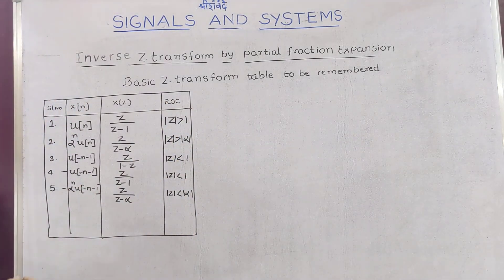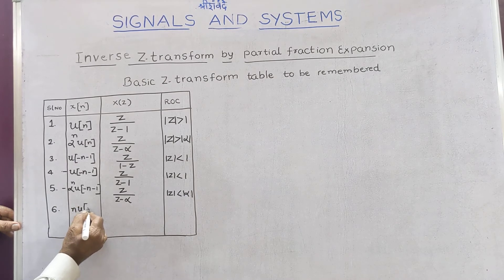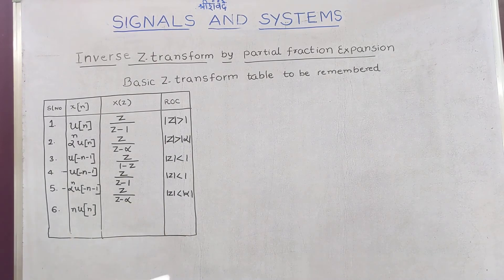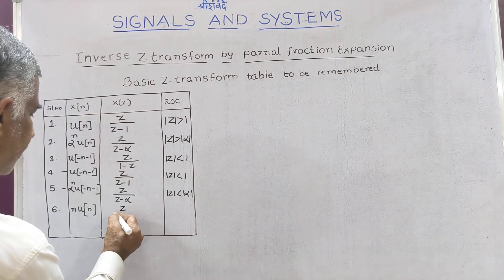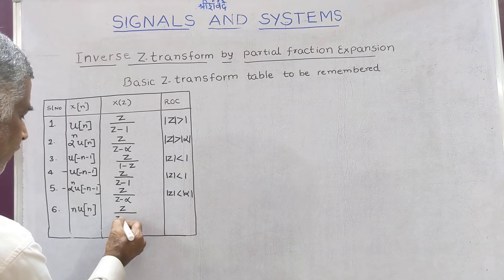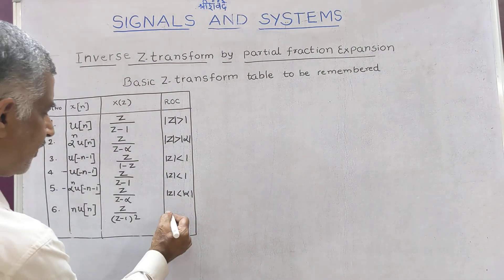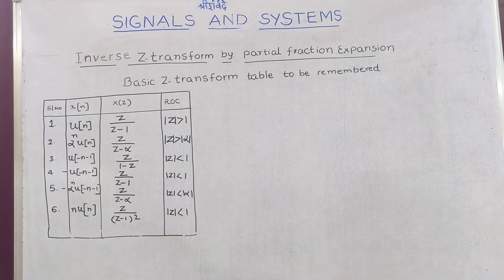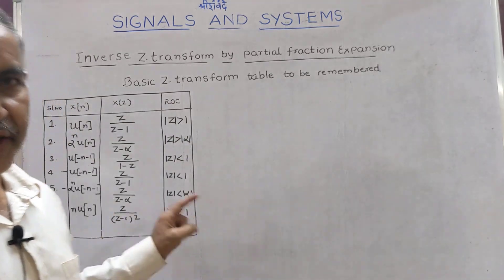The 6th one: u[n] multiplied by n, that is n · u[n]. Its Z transform is Z over (Z minus 1)^2, with ROC |Z| greater than 1. Only on rare occasions do we come across this last one, which is why I have numbered it 6.